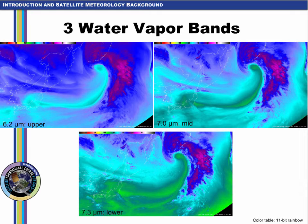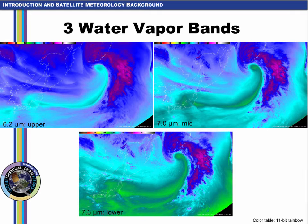We'll introduce the three water vapor channels by comparing them from Himawari, since the instrument is very similar to the ABI on GOES-R. Throughout this lesson, we'll be using the 11-bit rainbow color table. In this example from the Western Pacific, a strong cyclone with a well-defined dry slot appears readily in all three channels. From this point forward, we'll round off the wavelengths for each band, so we'll refer to the 6.2, 7.0, and 7.3 micron bands. In the 6.2 micron or upper-level water vapor band, brightness temperatures are generally colder in clear skies than those in the other two bands.